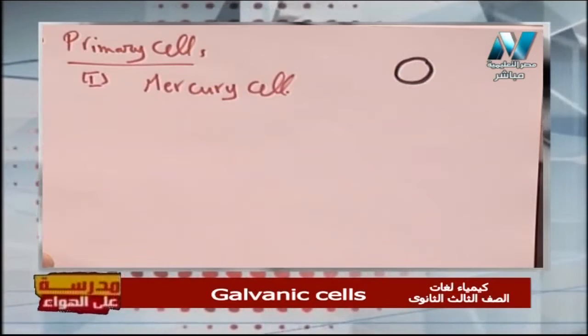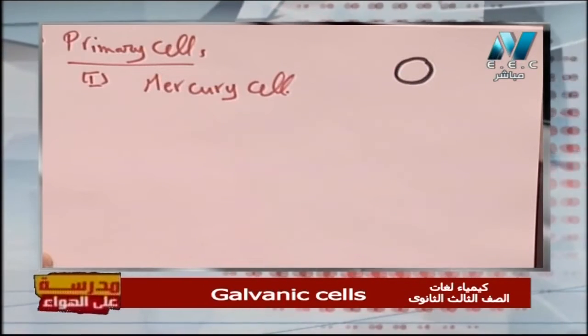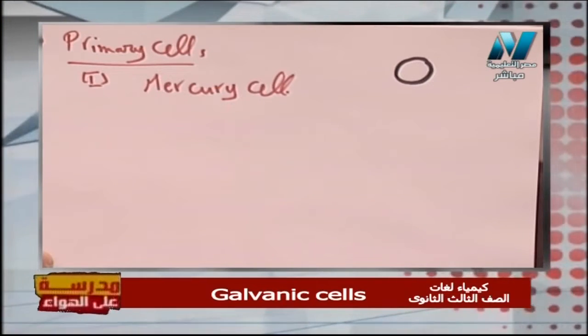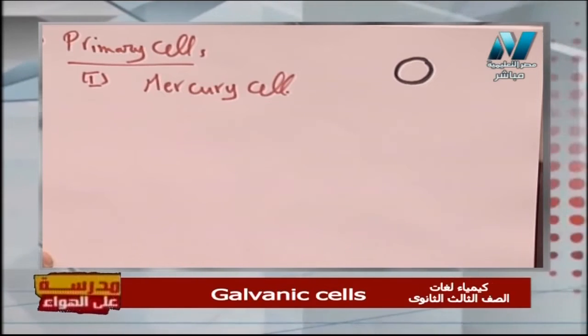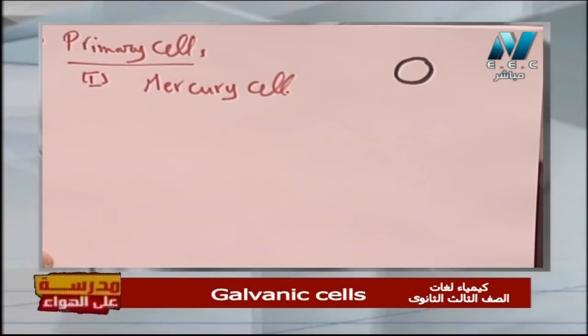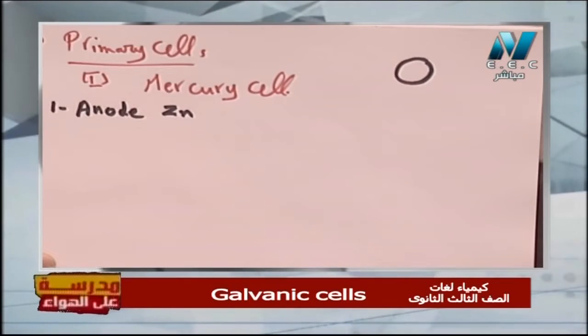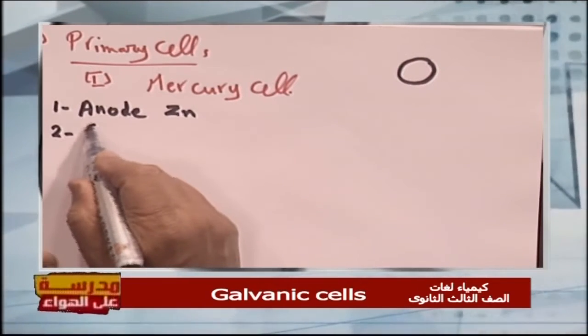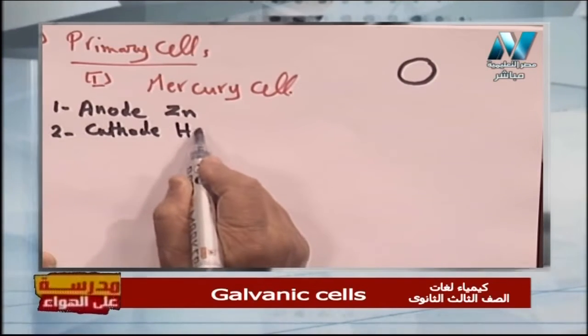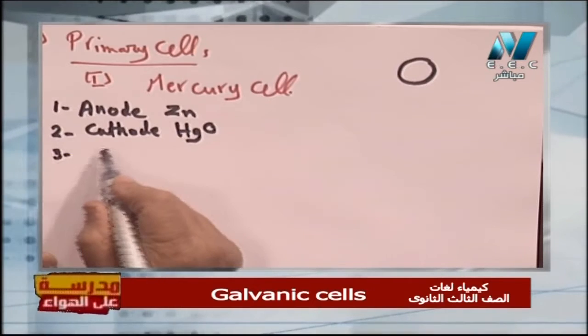The disadvantage of the mercury cell is that it cannot be recharged — once finished, you dispose of it. The mercury cell is made of steel and is found in watches, toys, clocks, and earphones. When we study any cell, we must know: who is the anode, who is the cathode, what is the electrolyte, the EMF, and the reactions that occur. Number one — the anode is zinc.